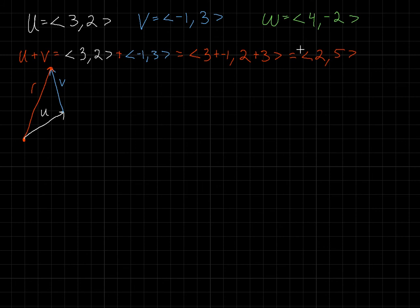We've got the component form and the graphical form — let's see if they match. If I take this resultant vector r, I can move 2 to the right and 5 up. So this red resultant vector has a component form of 2, 5. This does work. This is how you add vectors using the head-to-tail method.